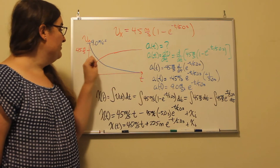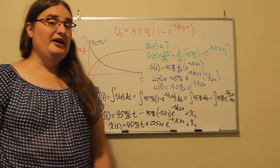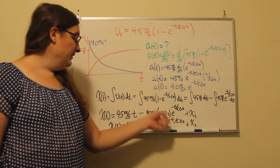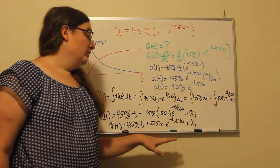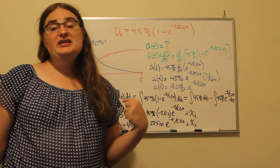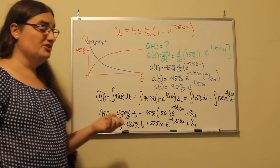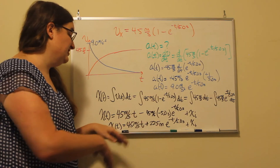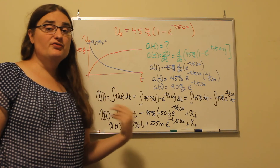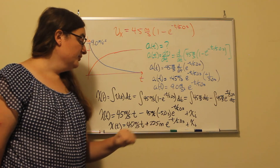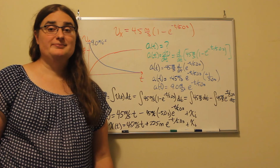The second term accounts for the additional distance from the acceleration phase getting from rest to final velocity. To know the constant of integration, we would need the starting location. In general, expressing this as change in position, the result is: change in location equals 45 meters per second times time plus 225 meters times e to the negative time divided by 5.0 seconds.